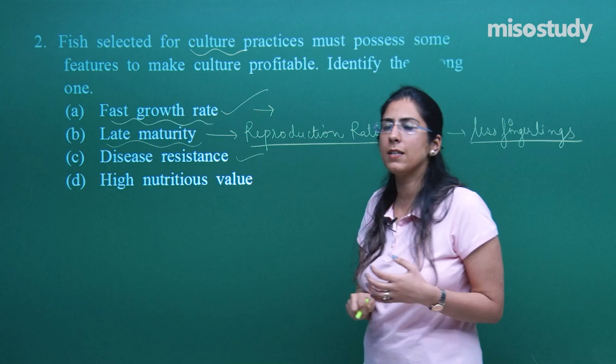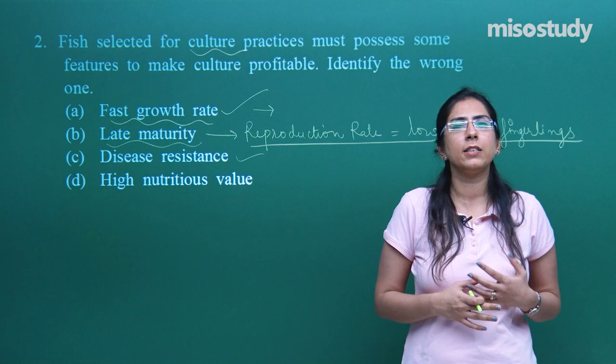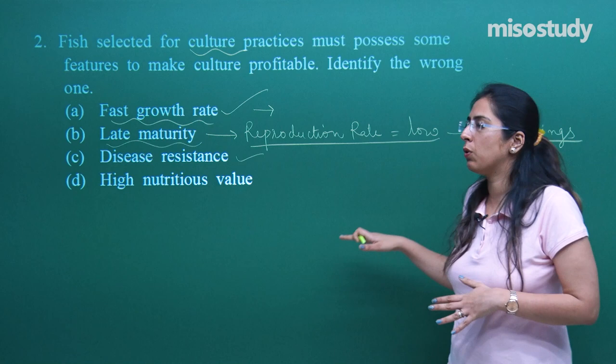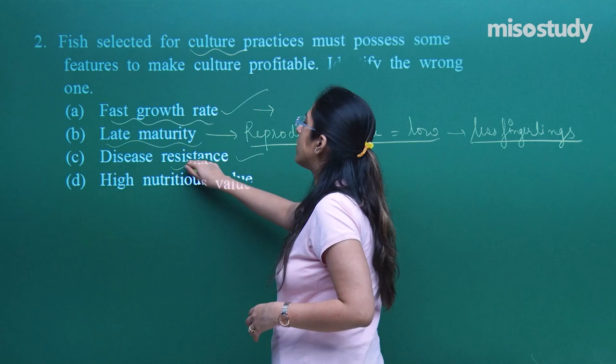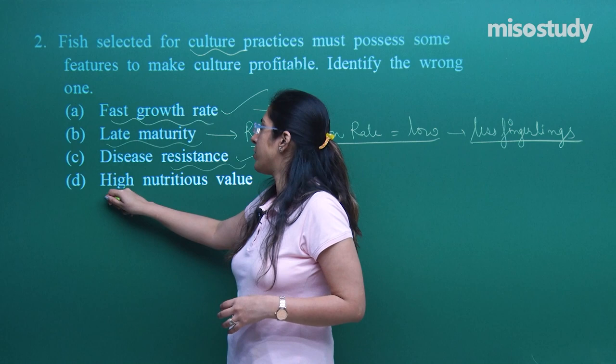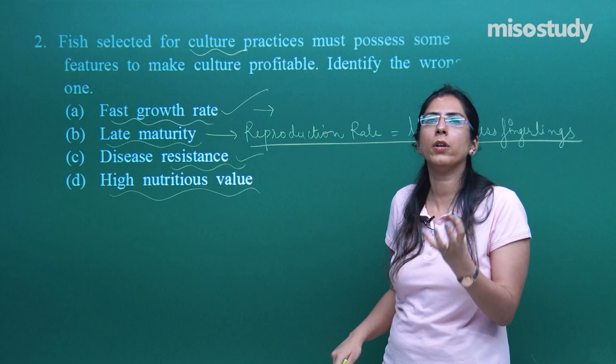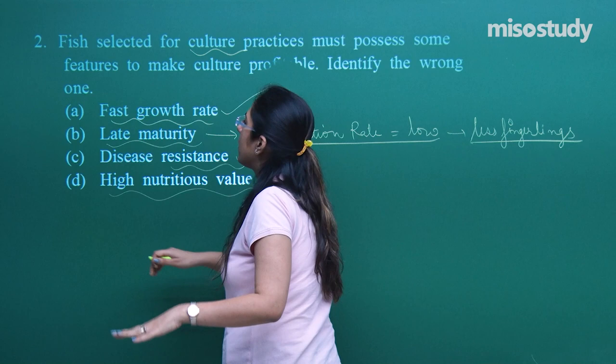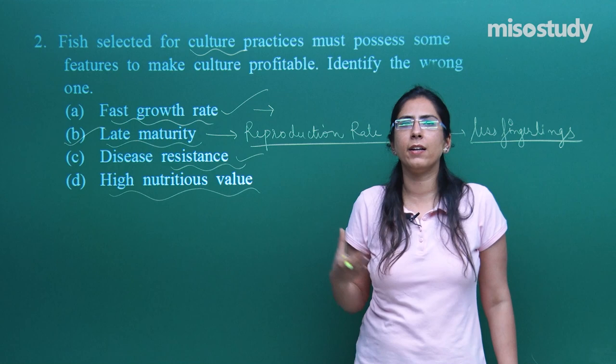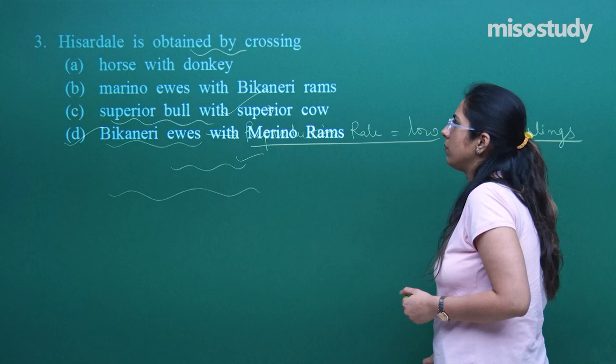Option C indicates disease resistance — yes, our fishes should be disease resistant, just as in our case we are exposed to bacterial and viral diseases. So fish should be resistant to bacterial as well as viral diseases. Option D is high nutritious value — yes, more nutritious value means more economic value for the culture. So the correct option is B, late maturity. We have to look for fish which mature at an early stage.